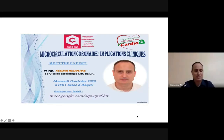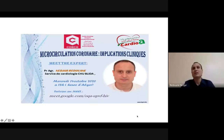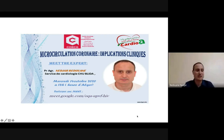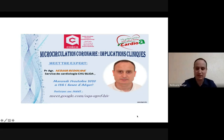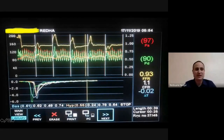Je vais commencer cette conférence par un cas clinique virtuel. C'est un patient qui a été traité pour coronaropathie, cardiopathie ischémique, par angioplastie, avec mise en place de plusieurs stents, sur plusieurs étapes. Et malgré tout, il restait symptomatique. On s'est dit peut-être qu'il y a une lésion significative fonctionnellement, et on n'a pas pu l'apprécier sur le plan angiographique. Il serait bien de faire une FFR sur certaines lésions suspectes, et même de compléter en étudiant la microcirculation.